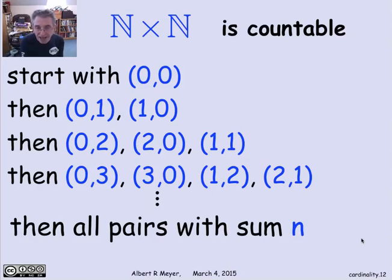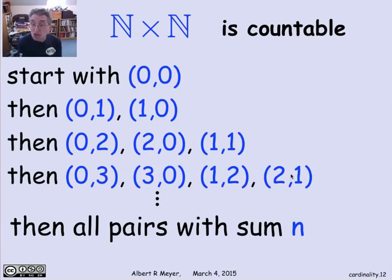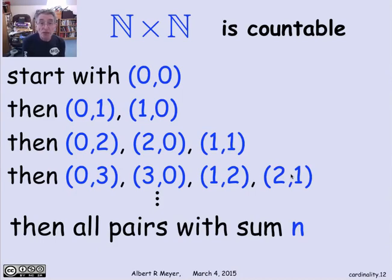Within a block, use some alphabetical rule for listing the pairs — any rule will do. This gives a bijection between the non-negative integers and the pairs of non-negative integers. That's another important bijection.